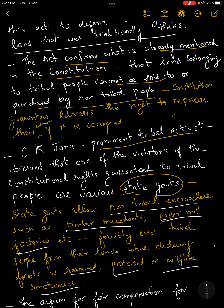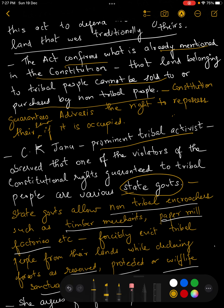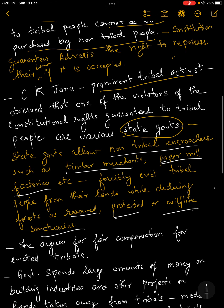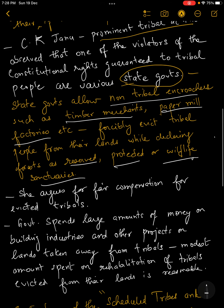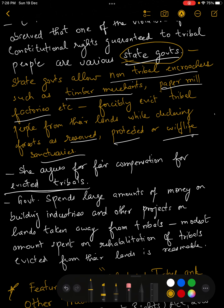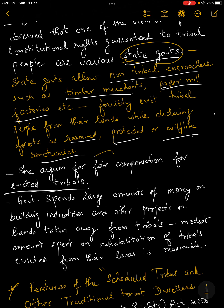An absolute staggering number of tribals have been displaced because of our quest to protect wildlife as well. I want to remind you all that preservation of wildlife is critical, but at what cost? C.K. Janu also argues that in case tribals are evicted for whatever reason, they ought to be paid fair compensation — which in today's times is something you rarely get to see. That is another very serious concern.